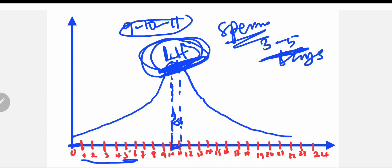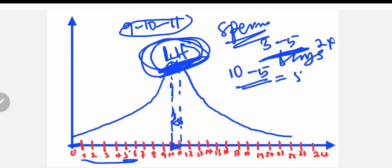For the 24-day cycle, take the ovulation day — the 10th day — and subtract five days: 10 minus 5 equals 5. Then take the 10th day and add 5: 10 plus 5 equals 15. So from the 5th day up to the 15th day are the unsafe days.